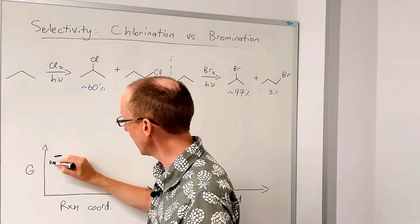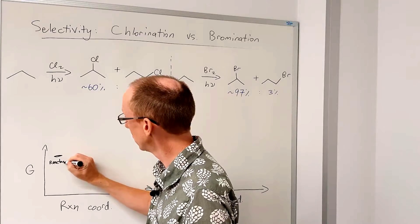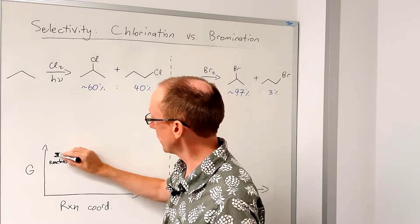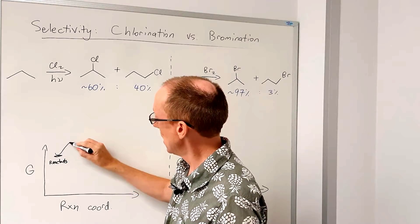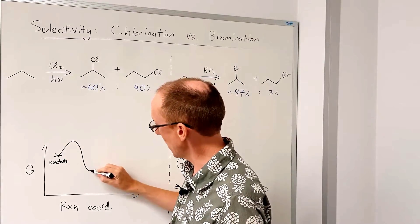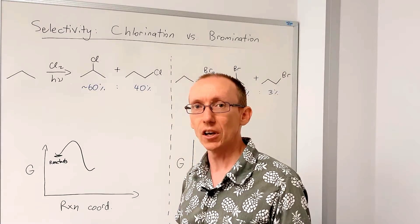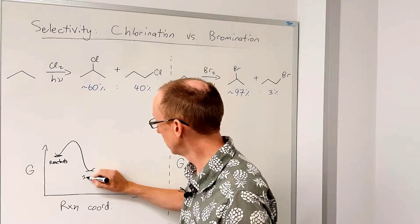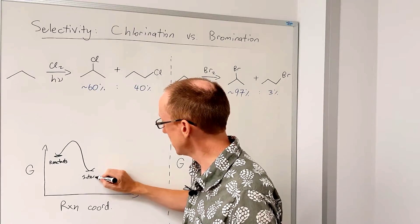So this is going to be the reactants. And then we're going to go up through a transition state and then down to our intermediate which is going to be an alkyl radical. There's our intermediate there.